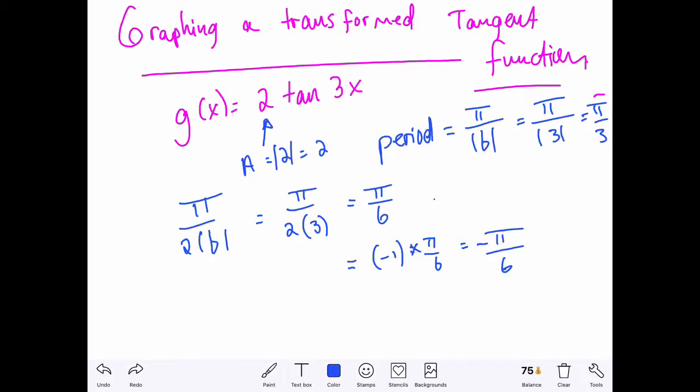So what did I do? Well, π over b to determine my period. And then I did π over 2b to determine where the vertical asymptote was. And then I multiplied by negative 1 to determine the other asymptote. And if I wanted to keep on going finding more asymptotes, I could multiply by odd multiples of π sixth here. So I could multiply by 3 or 5 or 7 and so on.